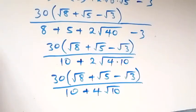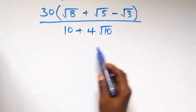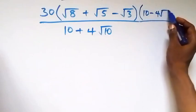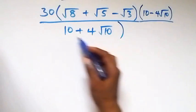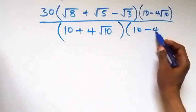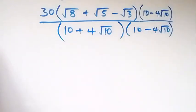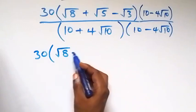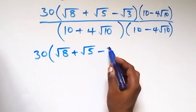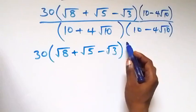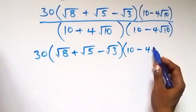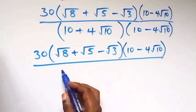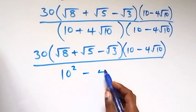From here we can also rationalize this and multiply by the conjugate. The conjugate here is 10 minus 4 root 10. This also multiplies by 10 minus 4 root 10. So we maintain 30 into bracket root 8 plus root 5 minus root 3, multiplied by 10 minus 4 root 10, then divided by the expansion: 10 squared minus 4 root 10 all squared.